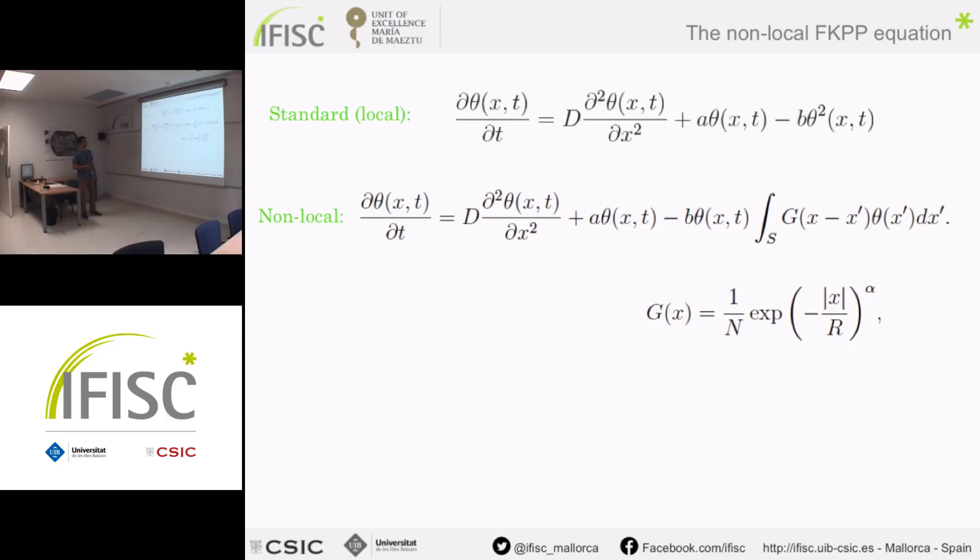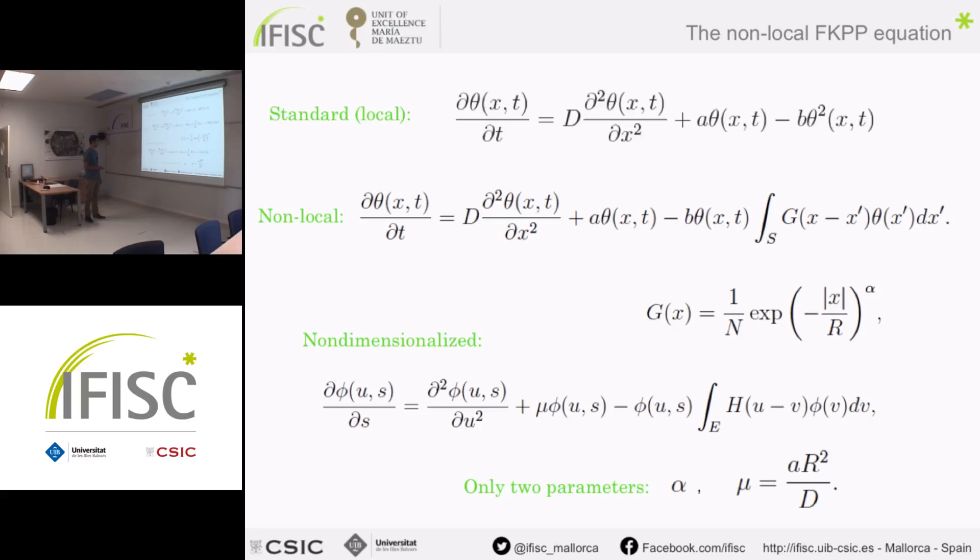If we introduce the non-localities, we have this equation where G is called the kernel function. We take this expression for the kernel function that changes with the alpha parameter, which changes the shape of the interaction between individuals. R is the interaction length and N is a normalization constant. After non-dimensionalizing the equation to reduce parameters, we now only have two parameters: alpha for the shape of the kernel, and mu. This is the equation we will study.